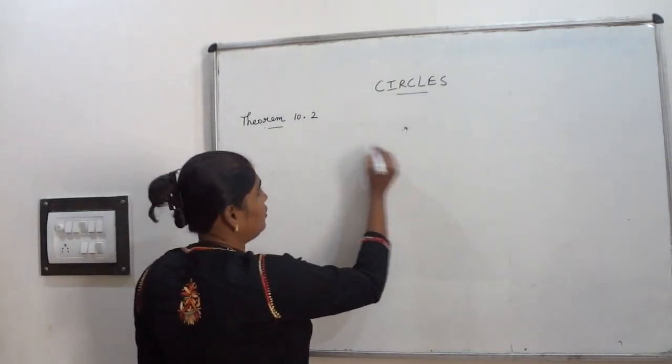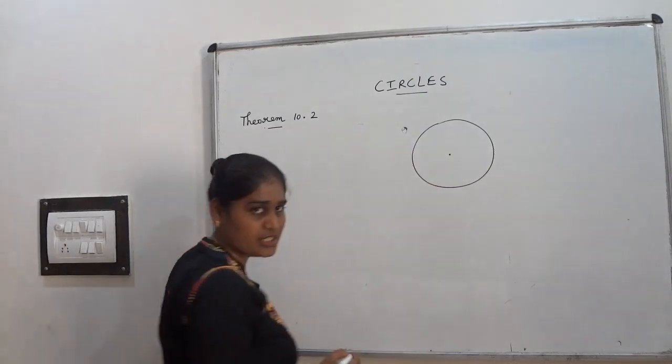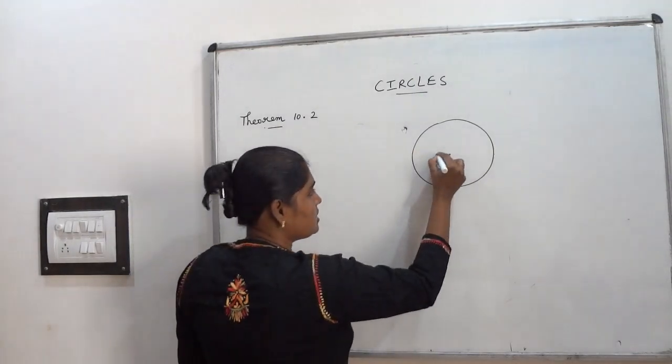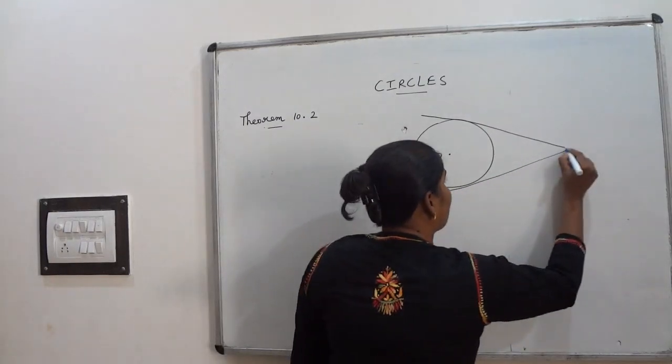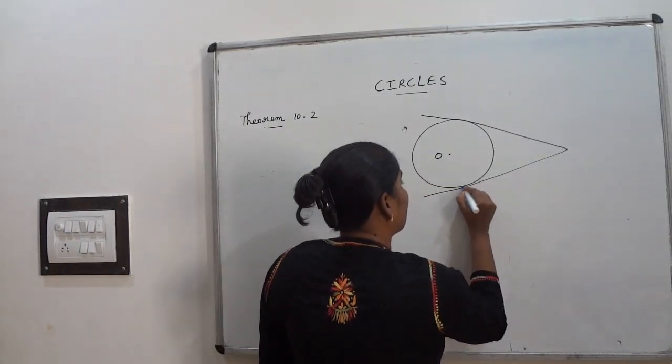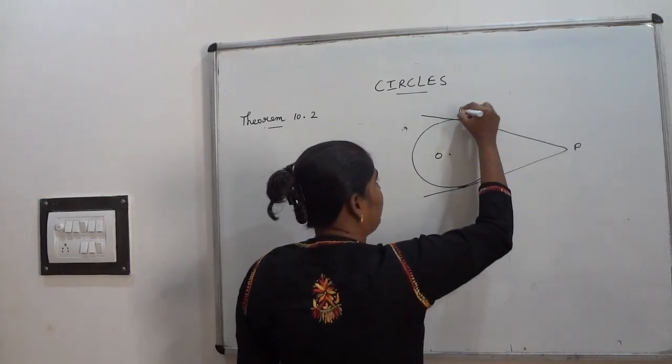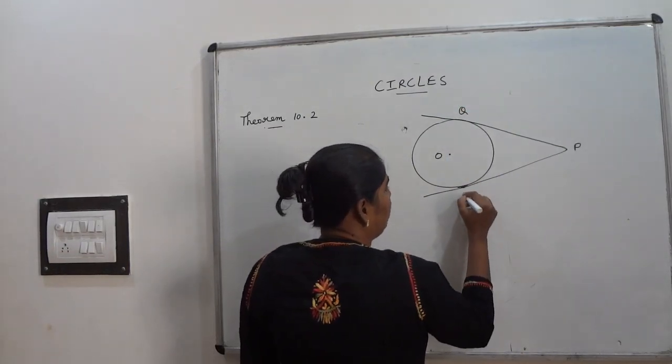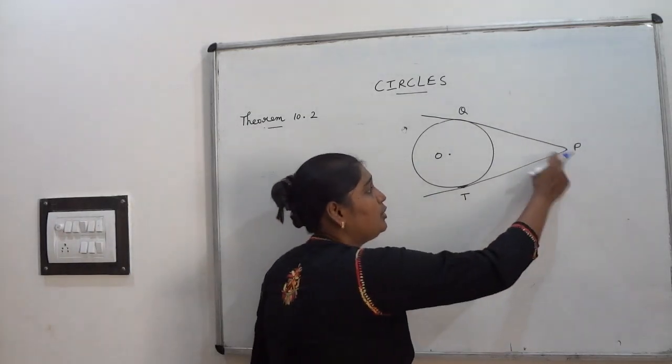So first of all draw the circle with two tangents from an external point. So O is the center of a circle and PQ, PT are the two tangents from an external point to a circle.